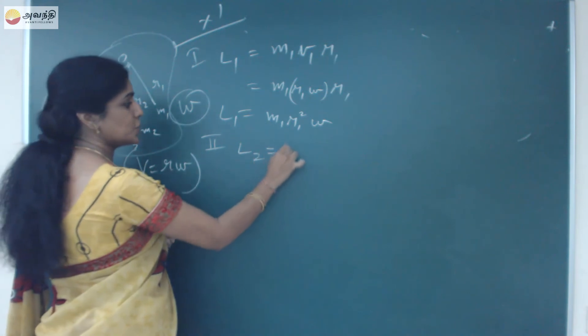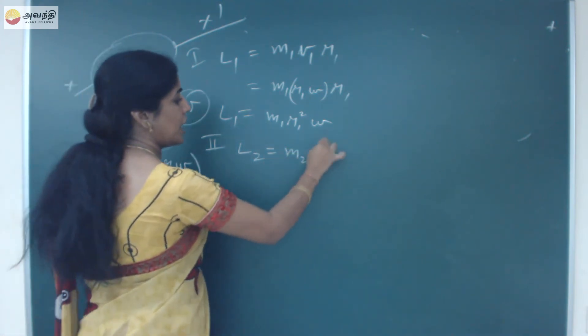For the second particle, can I write L2 equals M2, R2 square omega.